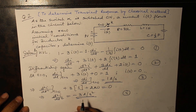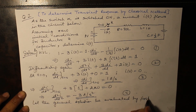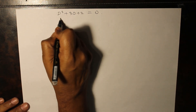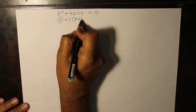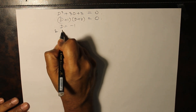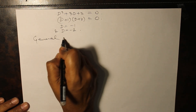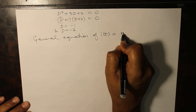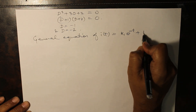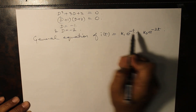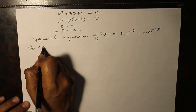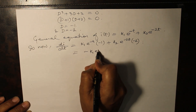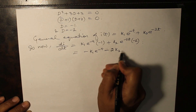Now let us solve this equation. The characteristic equation is d²i/dt² + 3 di/dt + 2i = 0, which gives (D+1)(D+2) = 0, so D = minus 1 and D = minus 2. The general equation of i(t) will be: k₁ e^(−t) + k₂ e^(−2t). We have substituted the roots minus 1 and minus 2. Differentiating once gives: di/dt = minus k₁ e^(−t) minus 2k₂ e^(−2t).